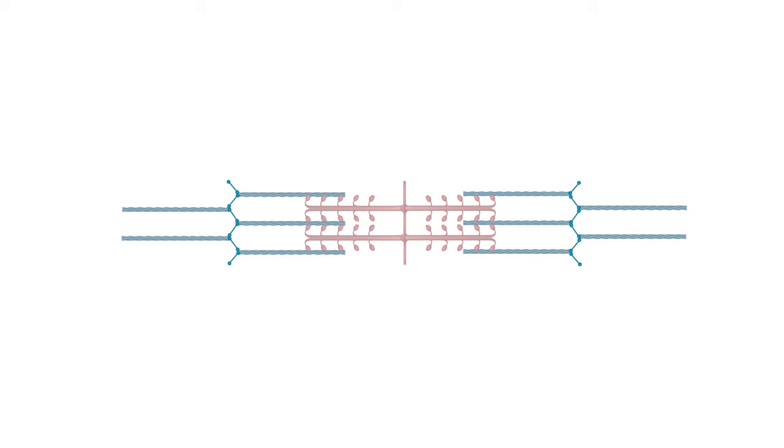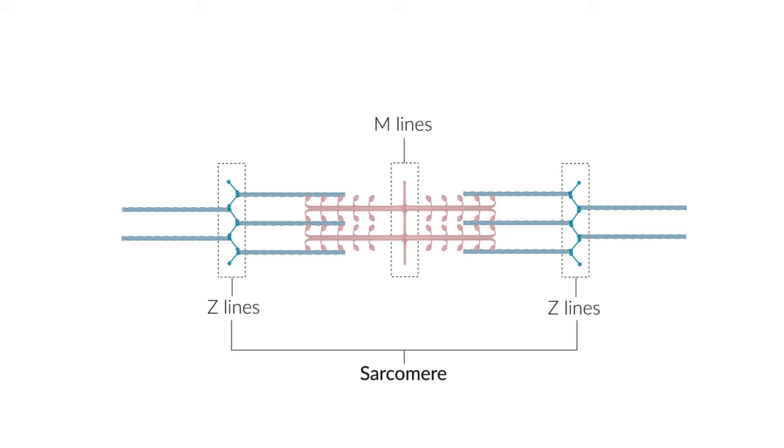Actin and myosin are arranged in a particular order that structures the sarcomere into different segments. The anchoring zones of myosin are termed M-lines, and for actin, Z-lines. The sarcomere is the region between two Z-lines.